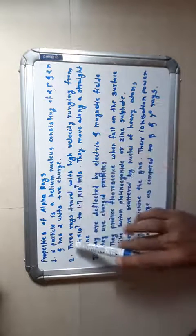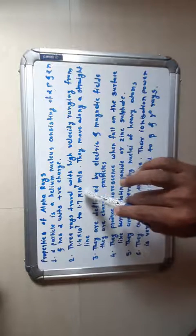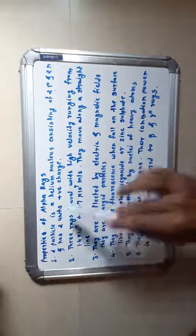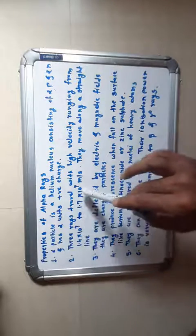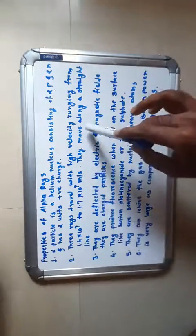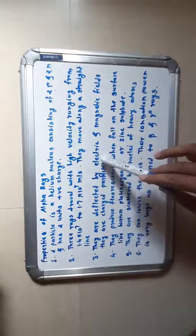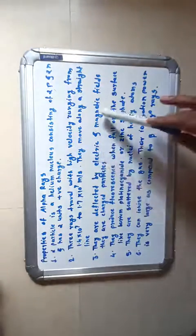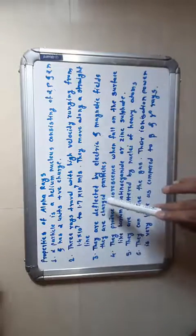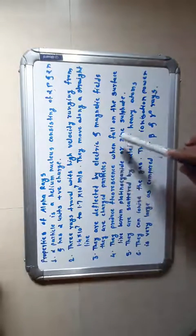Second property: alpha rays travel with high velocity, ranging from 1.4×10⁷ to 1.7×10⁷ meters per second. They move along a straight line. Third property: they are deflected by electric and magnetic fields, confirming they are charged particles.